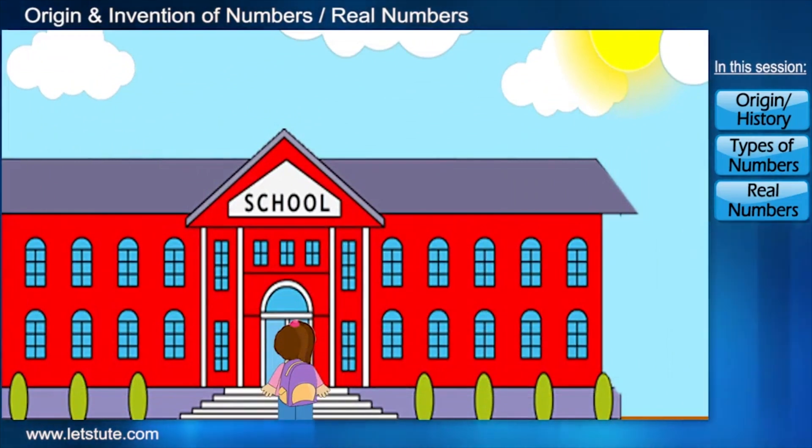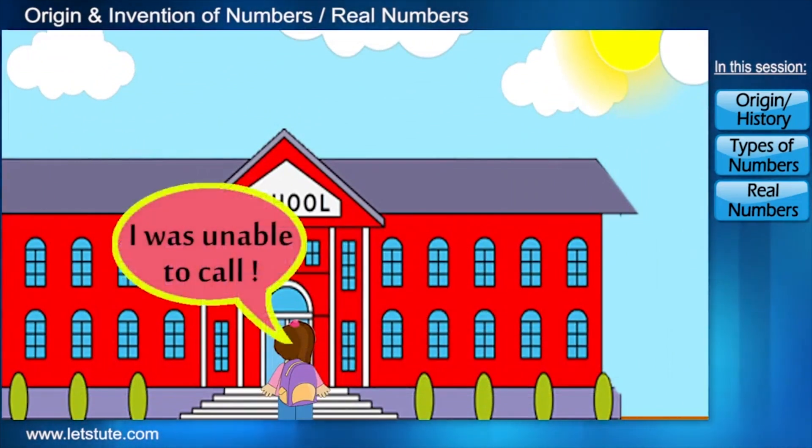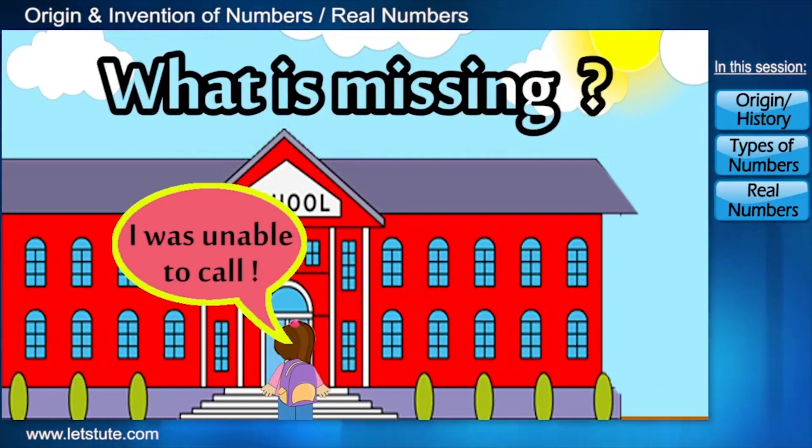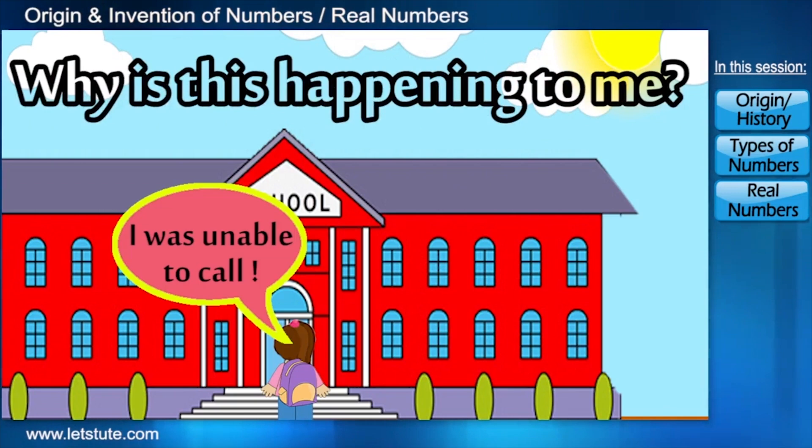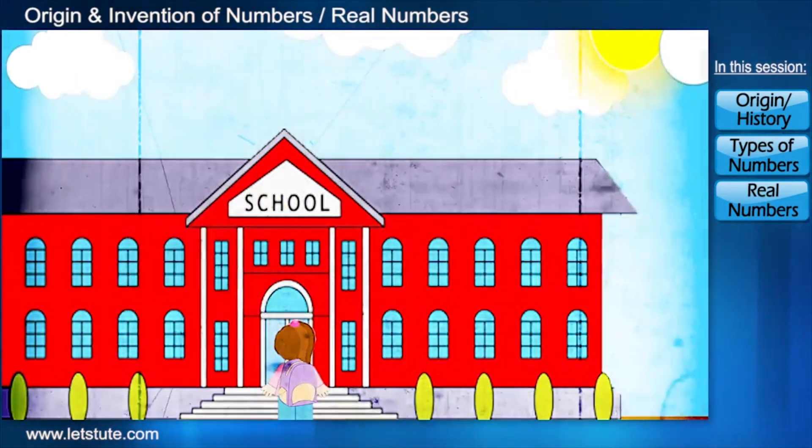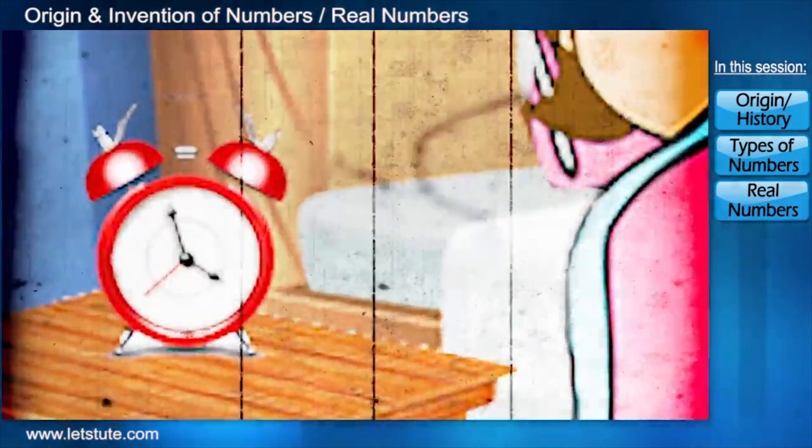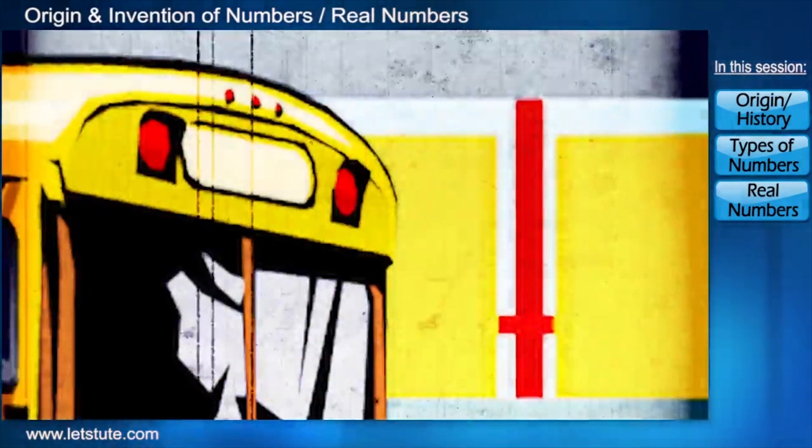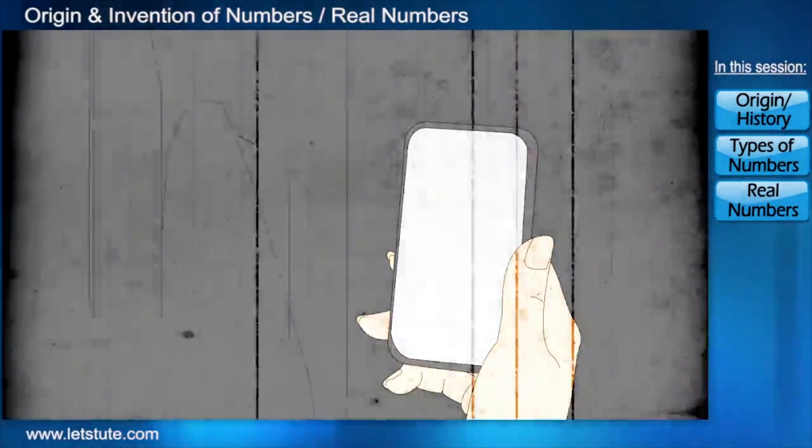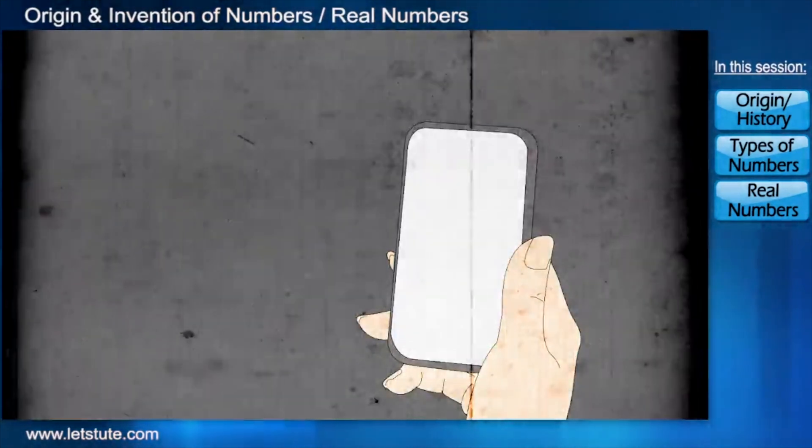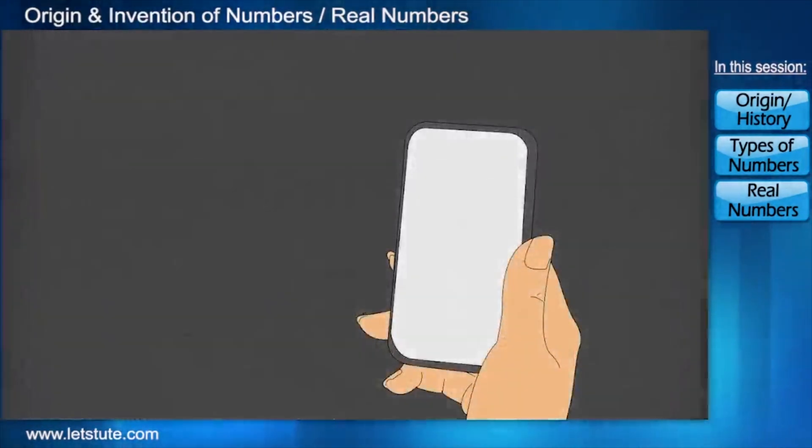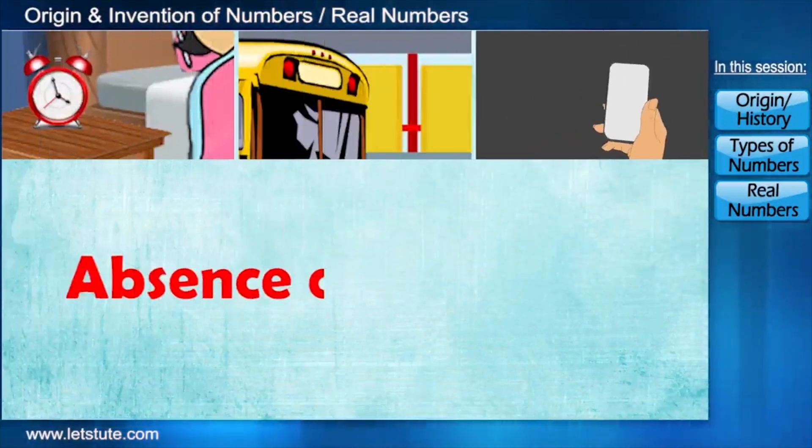I thought to inform my parents but again I failed to do this. But what is missing? Why is this happening to me? Let's go back and check. There were no numbers on my clock. Bus was without numbers and also there were no numbers on my phone. Everything messed up in the absence of numbers.